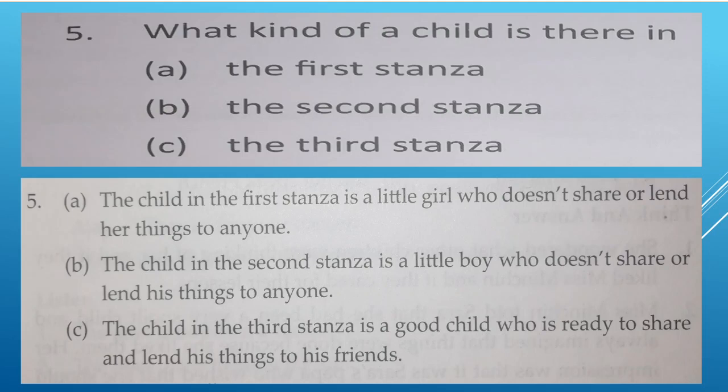What kind of child is there in the first stanza? The child in the first stanza is a little girl who doesn't share or lend her things to anyone. The first stanza is about a girl who doesn't share her things with anyone.